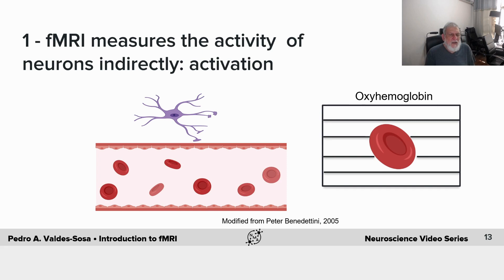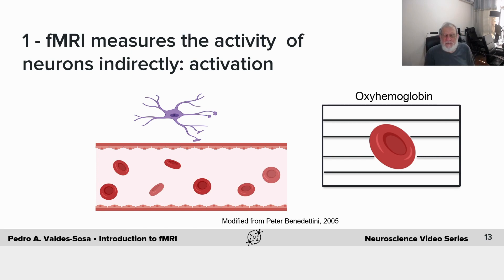On the other hand, when there's activation — that is to say, the sequence of events we will explain — there's a rush of blood cells carrying oxygen. Oxyhemoglobin does not distort the magnetic field; therefore, we have an increase of the MRI signal.